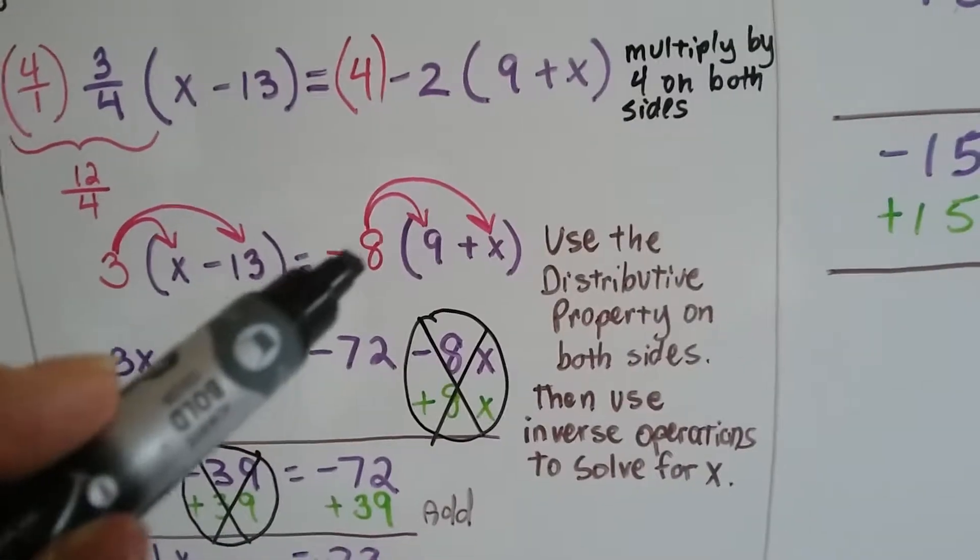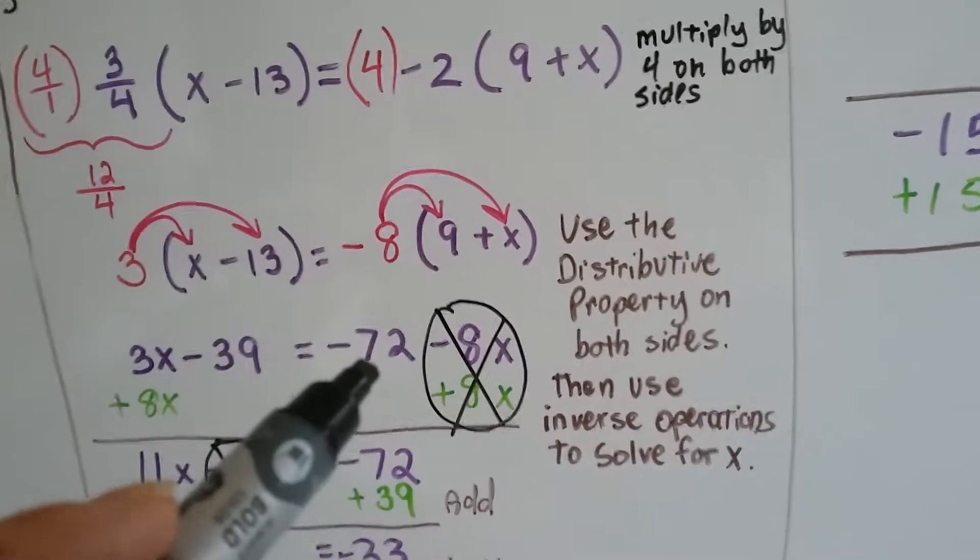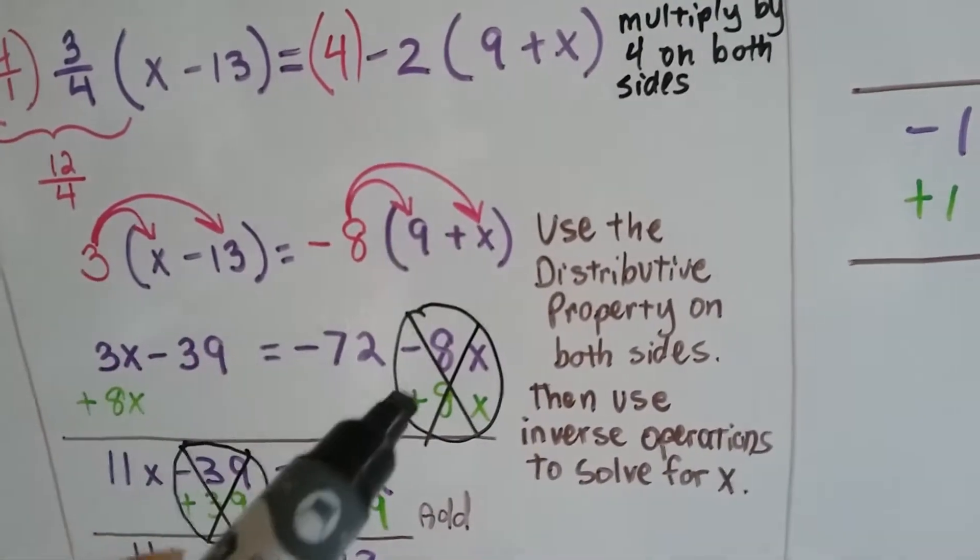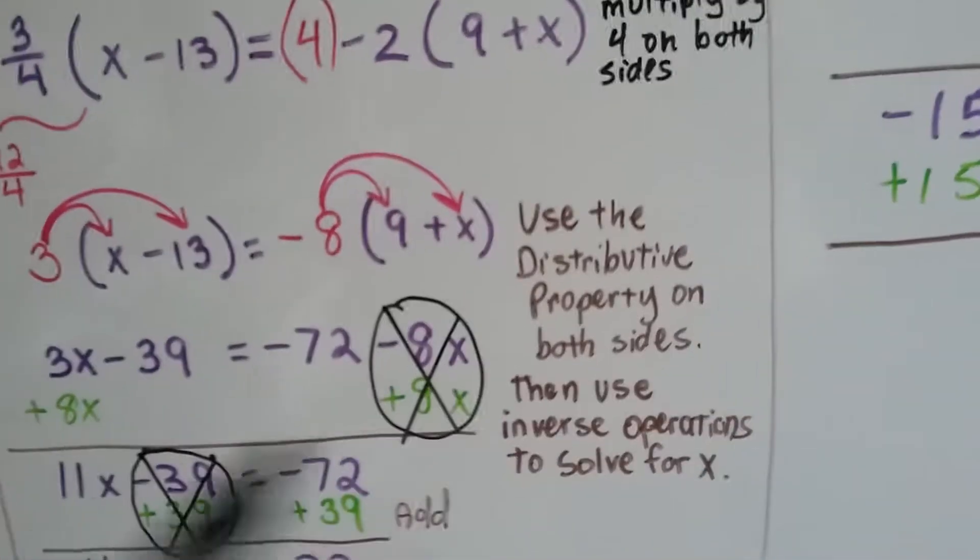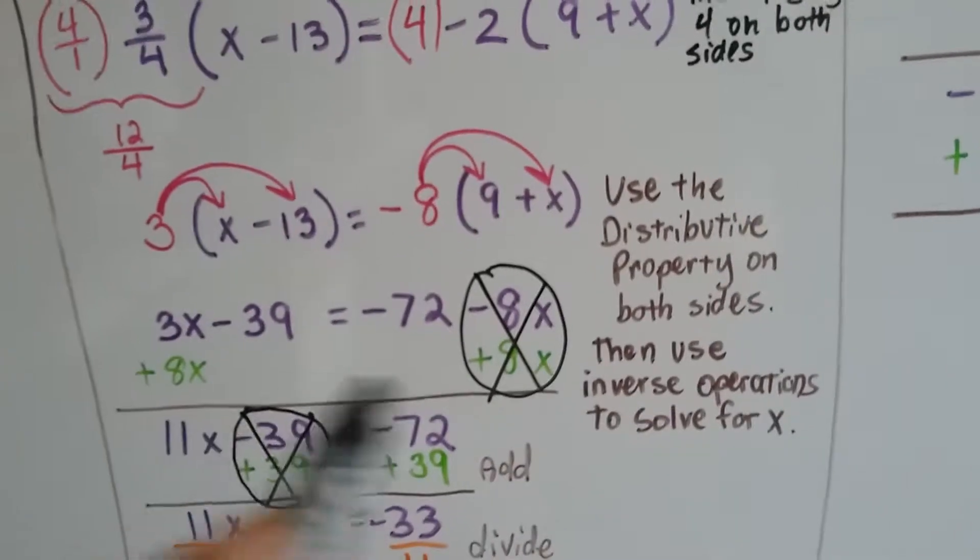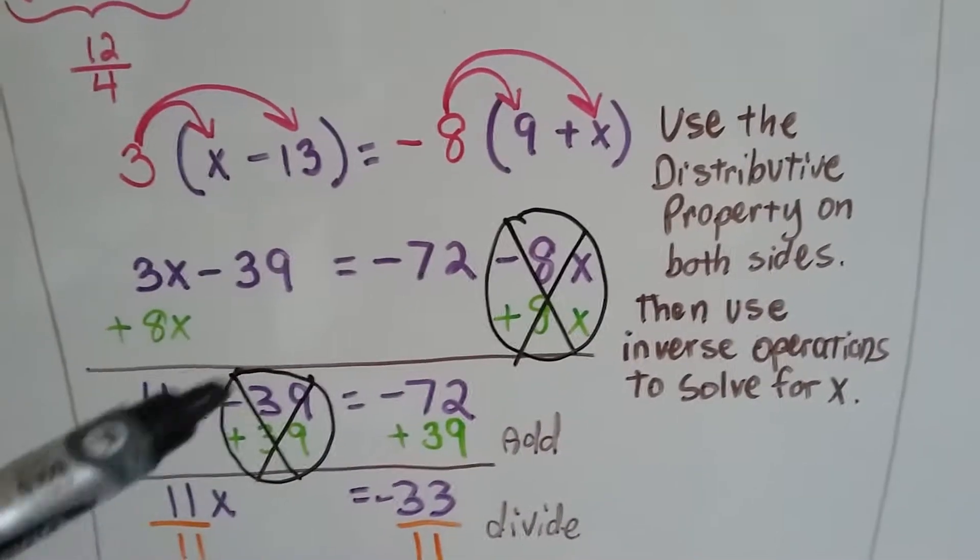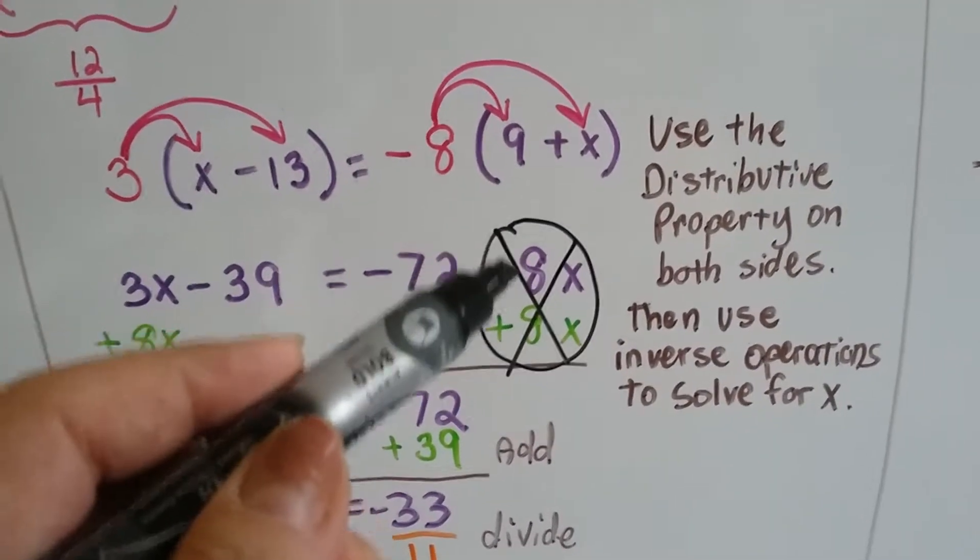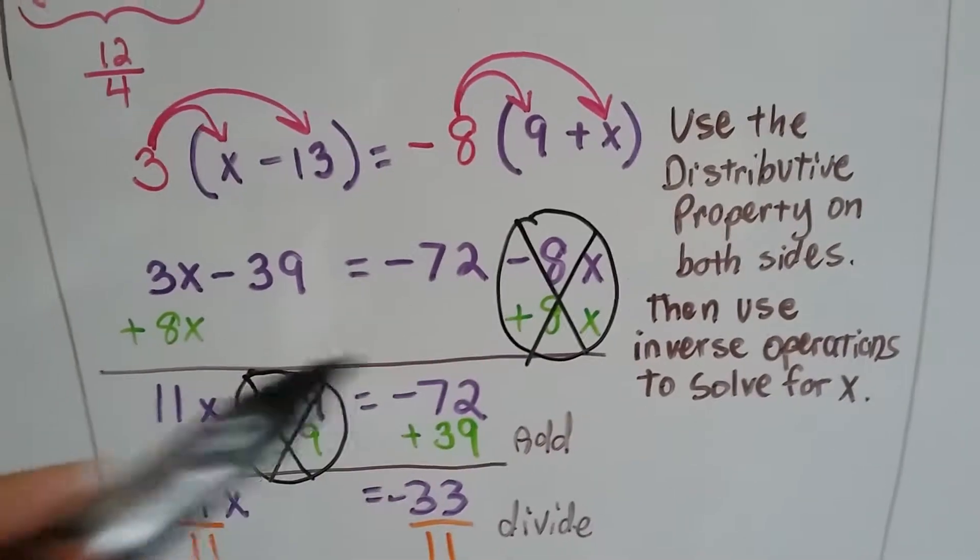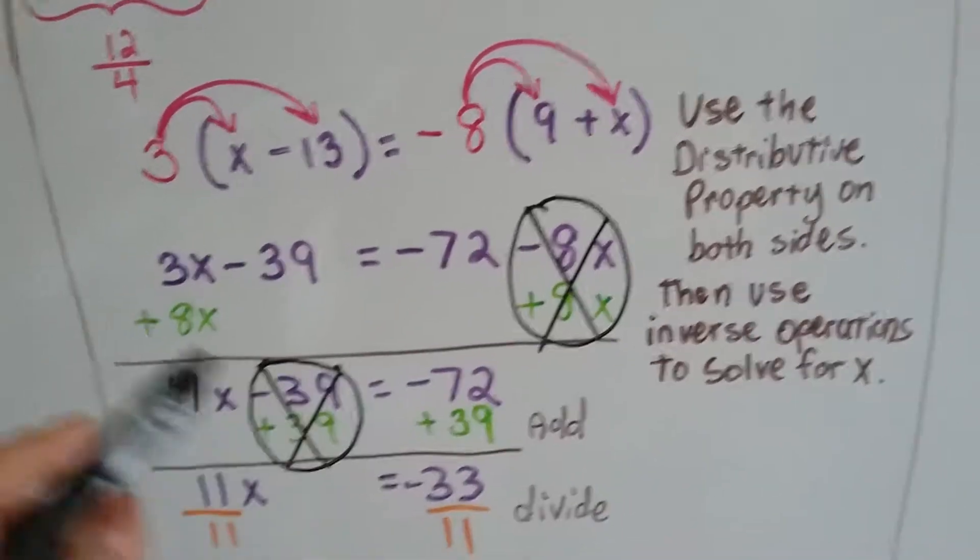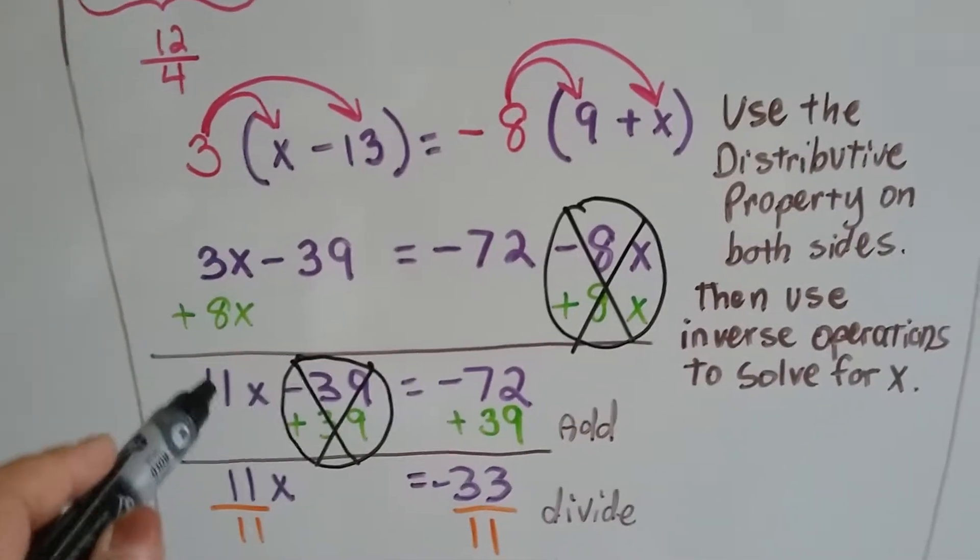Negative 8 times positive 9 is negative 72, and negative 8 times a positive x makes negative 8x. Now we're ready to do inverse operations and eliminate some of these terms. Because it was negative 8x here, I added 8x to both sides. They annihilate this one, and now it's gone. We add 8x to this side and get 11x.